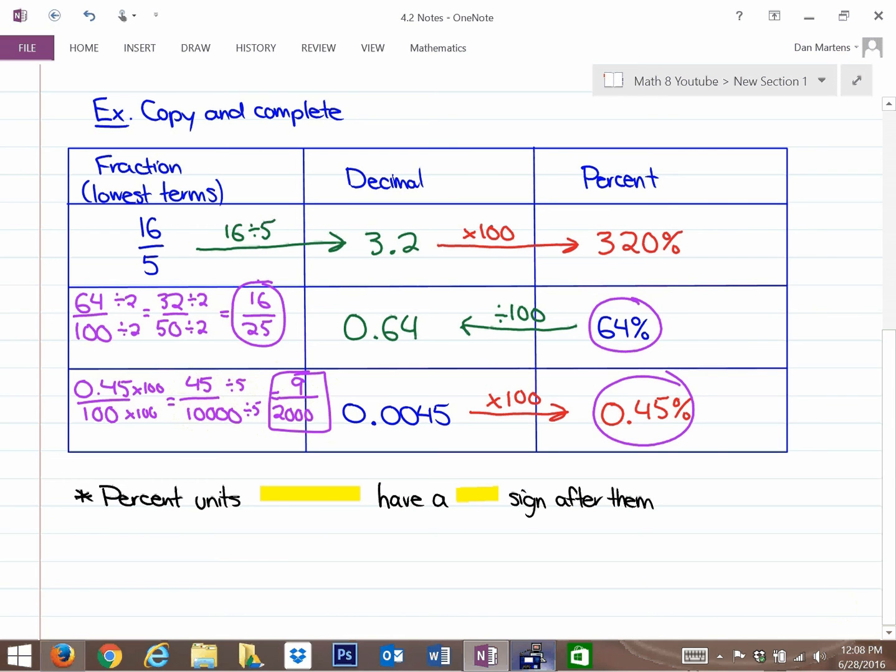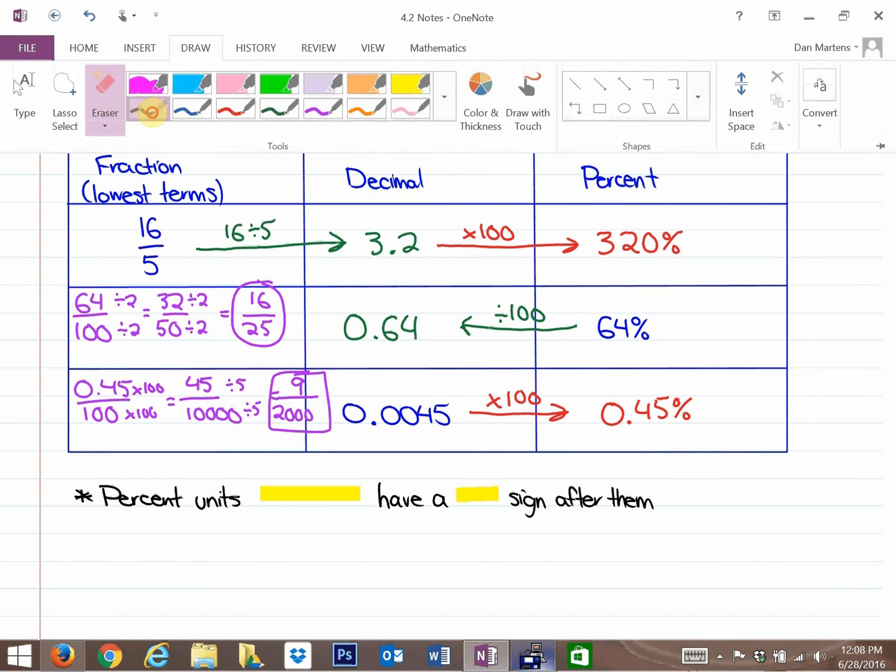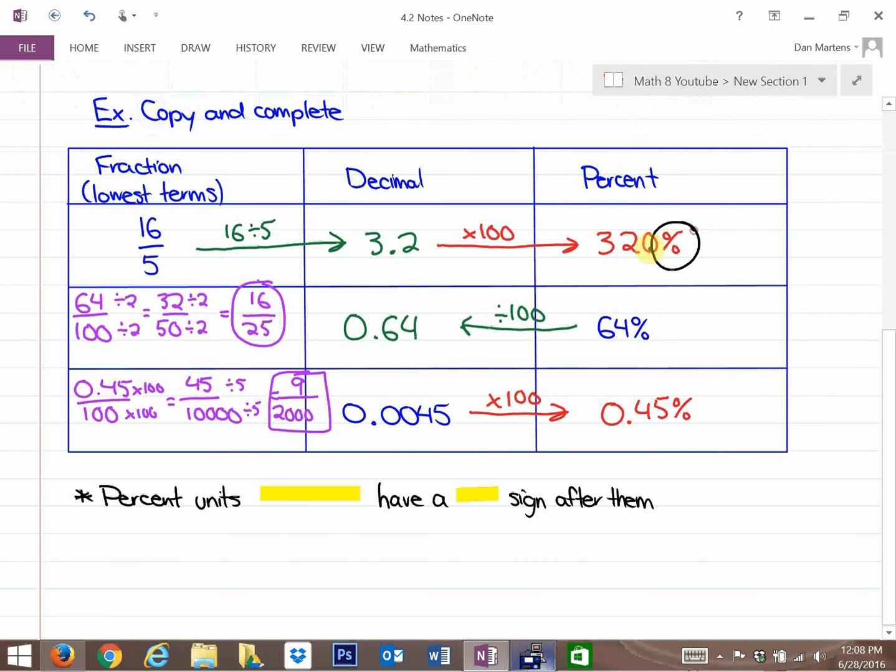And the last thing that I have students, that some students tend to miss in these cases, is they forget to put percent units on the percent percentages themselves. So just be careful that for percents, you always have the percent signs. Again, you might want to review this lesson. It's a little bit tricky to convert between fractions, decimals and percents, and also ask me questions. But yeah, the last key idea here is percent units, not maybe, but must, have a percent sign after them.